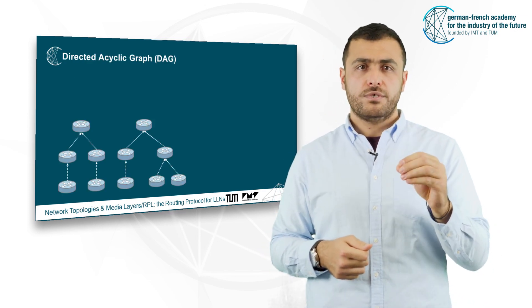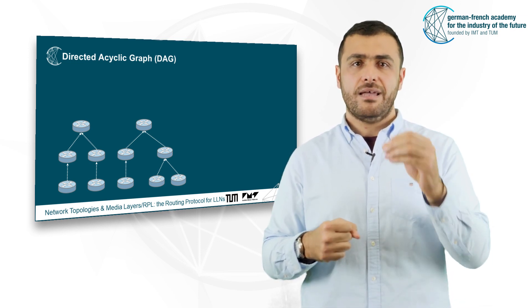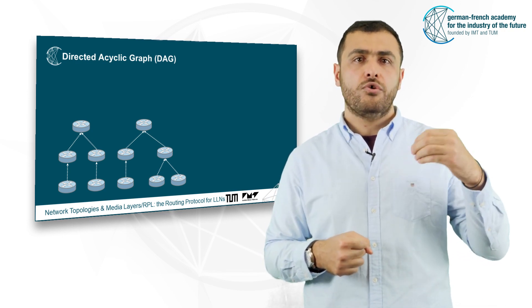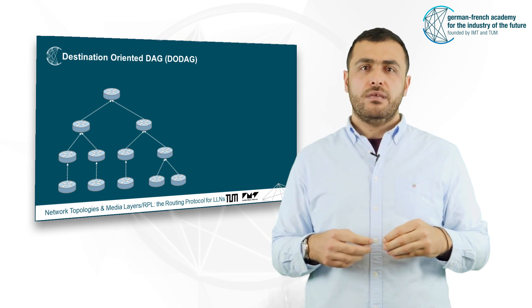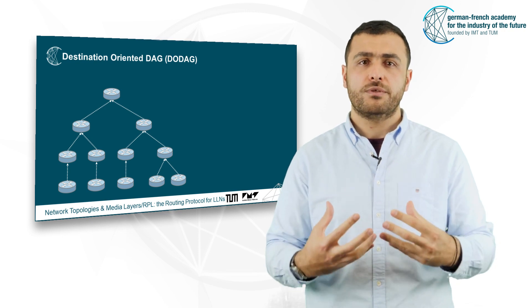The network topology is organized into a special case of a directed acyclic graph DAG called destination-oriented DAG, a graph where the connections between the nodes have a direction and non-circular property.